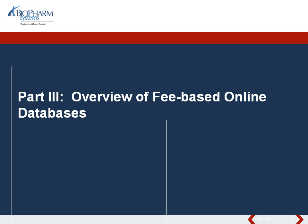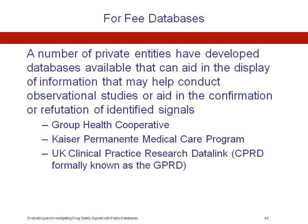Now let's look at the traditional fee-based databases, which are arguably far more substantial in their data, better organized, and better equipped to handle pharmacoepidemiologic trials. I'm going to cover three of the largest: the Group Health Cooperative, Kaiser Permanente's Medical Care Program, and the UK Clinical Practice Research Data Link — which you may be more familiar with as the GPRD database, which has now been rebranded.